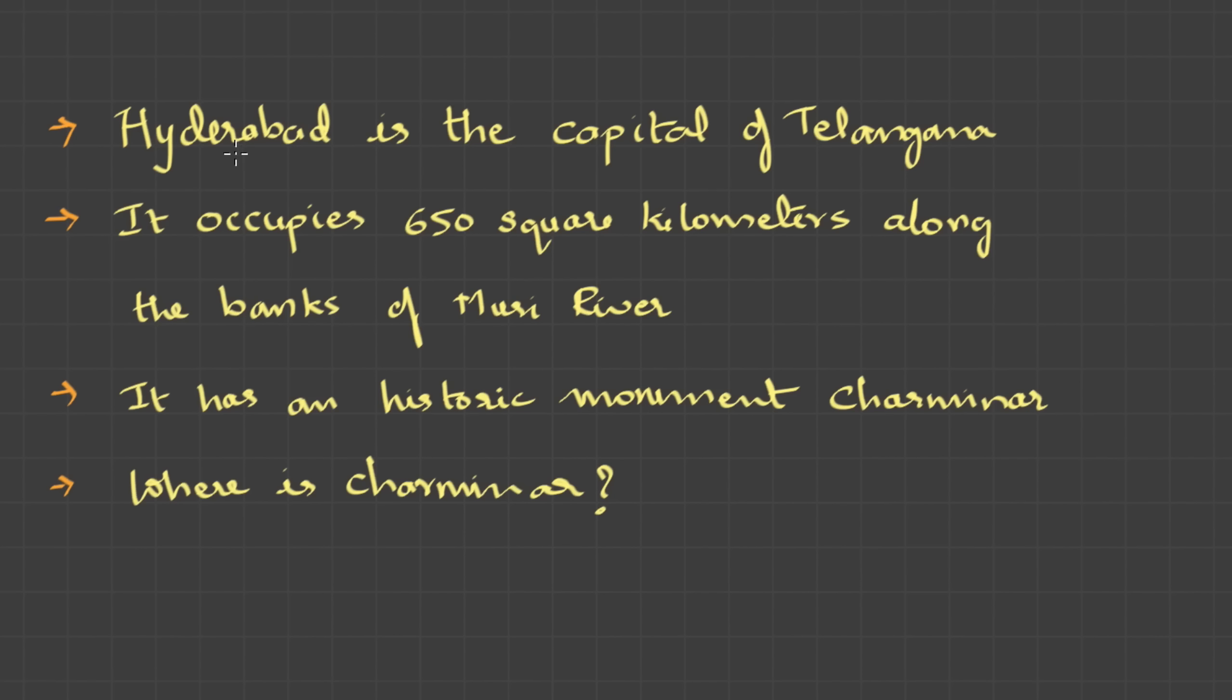Let's take the previous example on Hyderabad and let's try to identify the propositions. Hyderabad is the capital of Telangana. Yeah, this is right. So, its truth value is TRUE and therefore proposition. It occupies 650 square kilometers along the banks of Musi river. Yeah, that's correct as per wikipedia. So, it is true and therefore this is also a proposition. It has an historic monument Charminar. Yes, even this is true and so proposition.